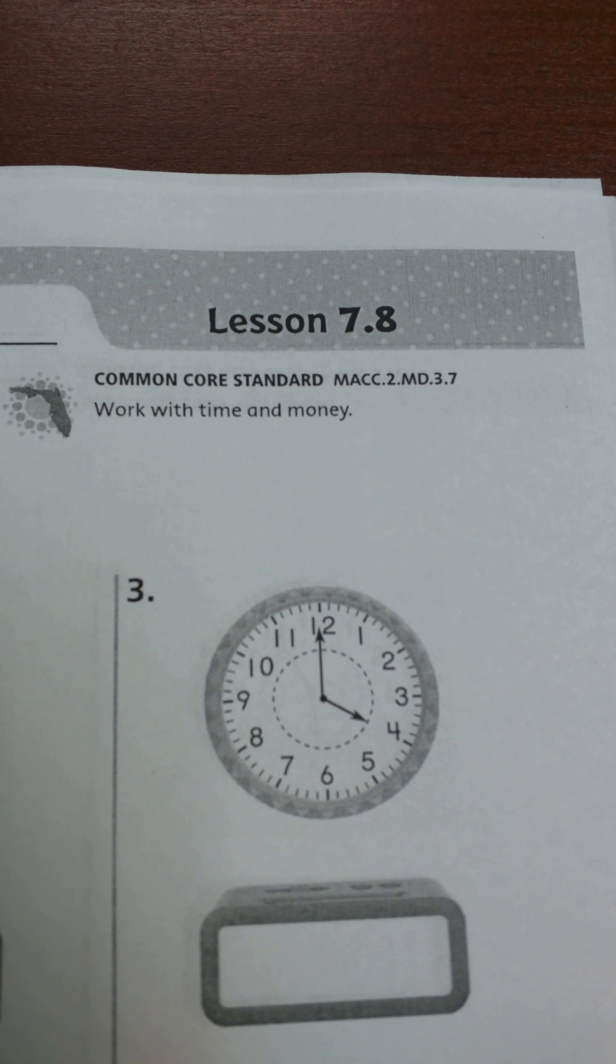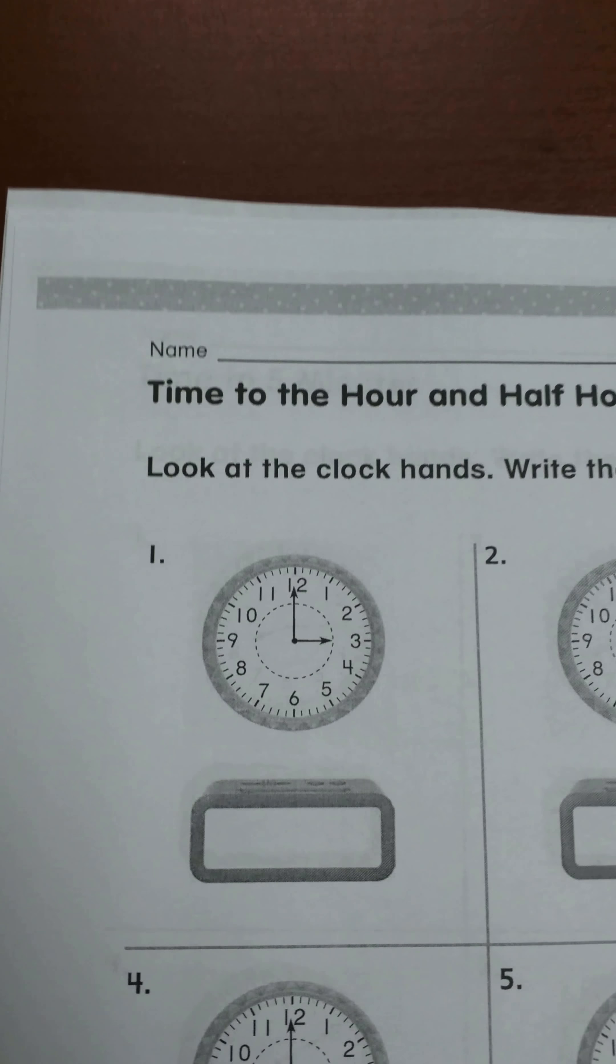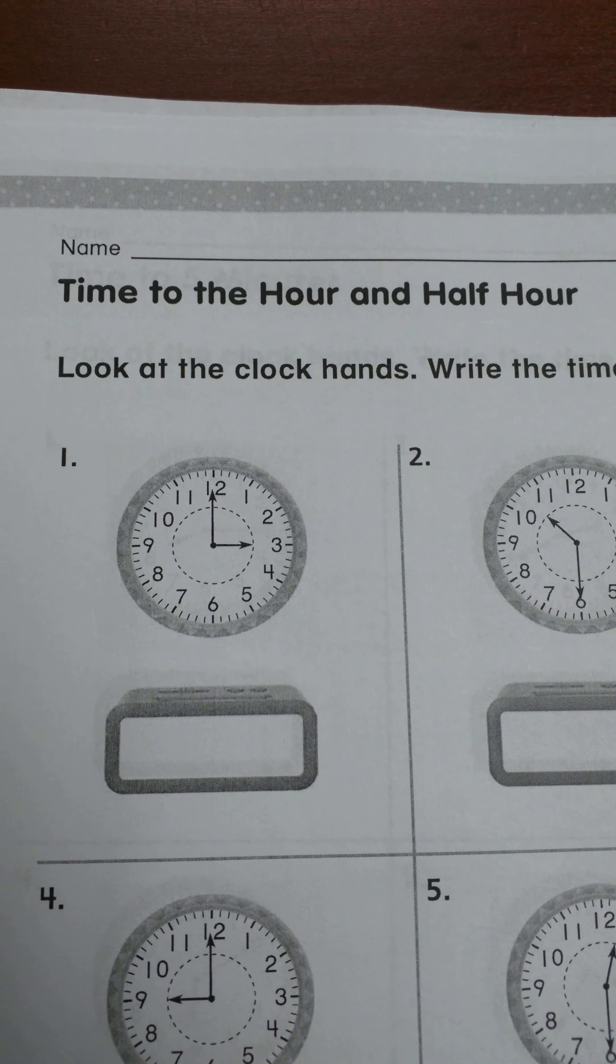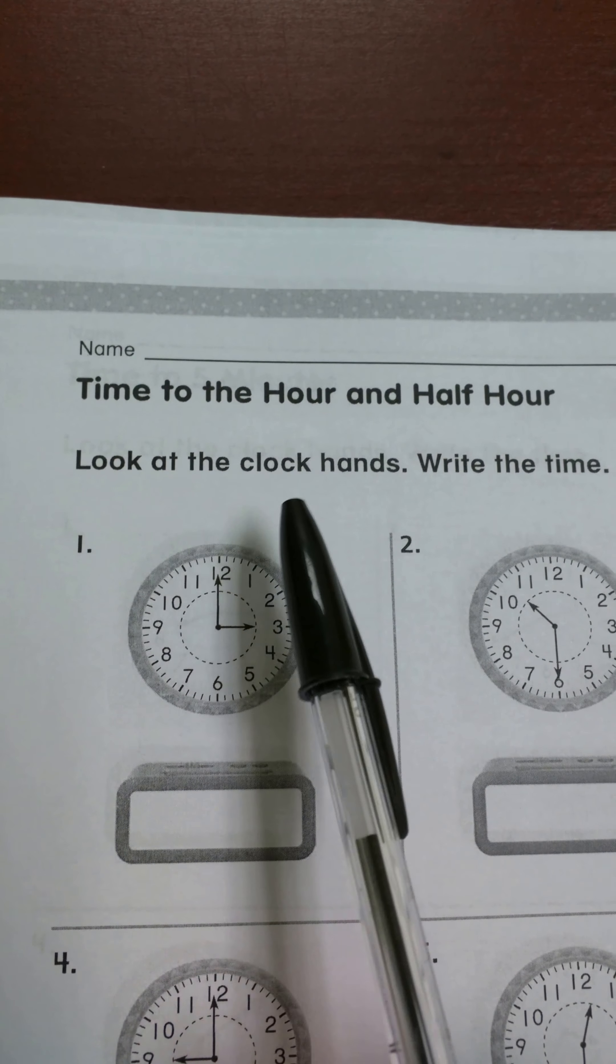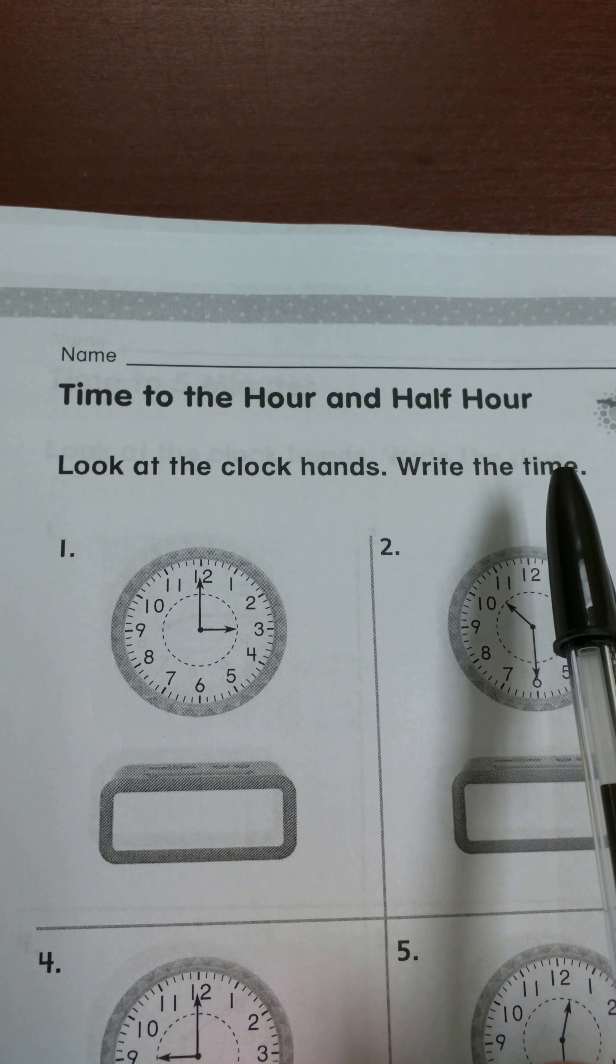This is second grade Go Math lesson 7.8, and we're moving into time. It's time to the hour and half hour. The directions say look at the clock hands, write the time.